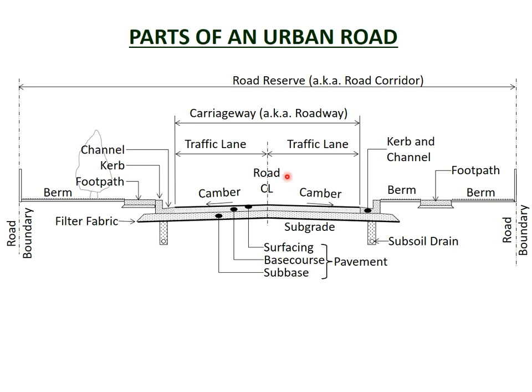This diagram shows an urban road. The road is constructed within a road reserve, which is also known as the road corridor. The road reserve is an area of land designated as being for a road and the associated parts of a road, such as the berm and the footpath.